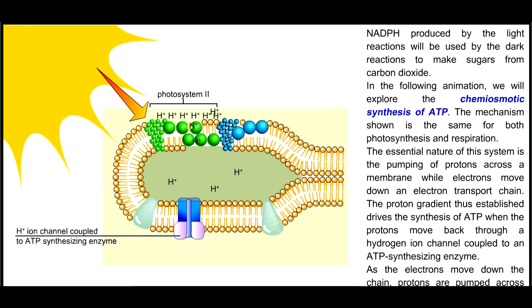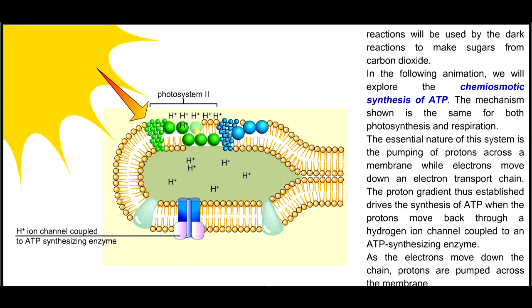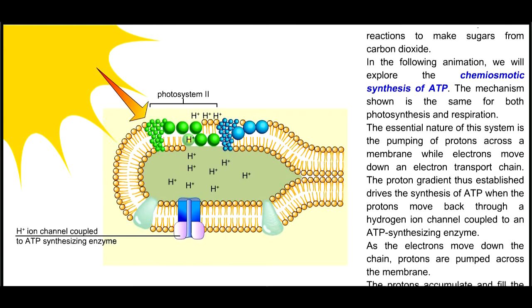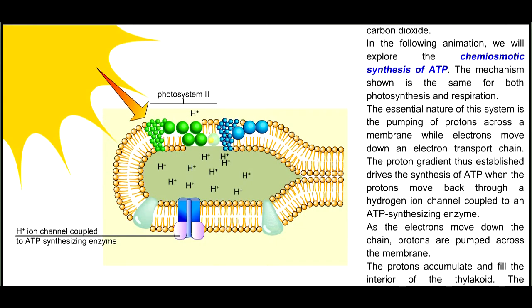As the electrons move down the chain, protons are pumped across the membrane. The protons accumulate and fill the interior of the thylakoid.